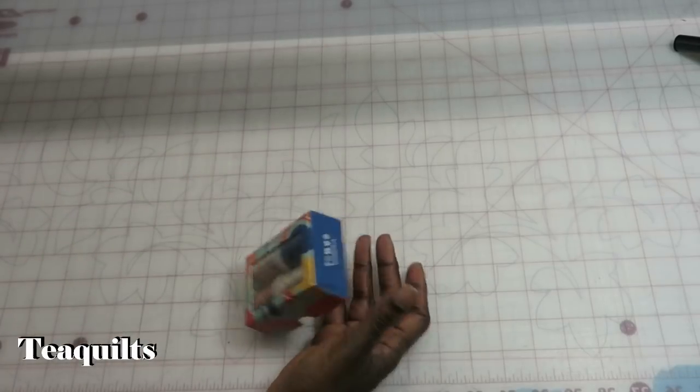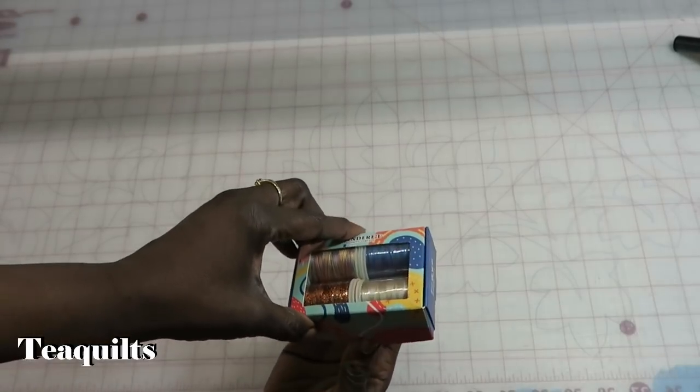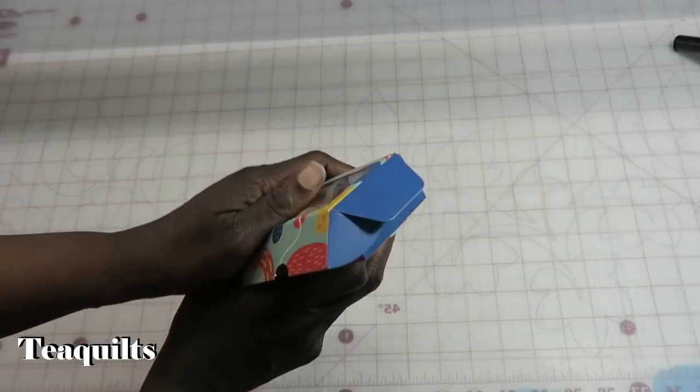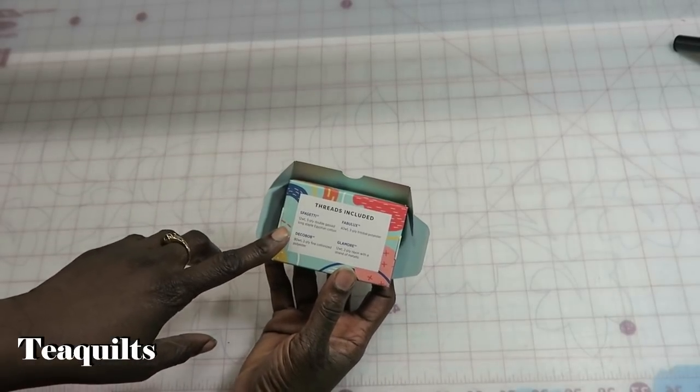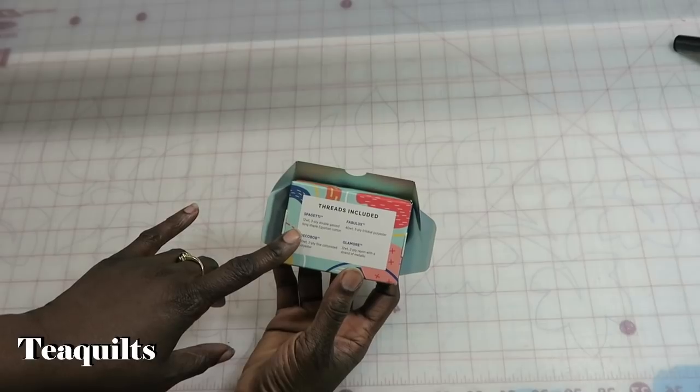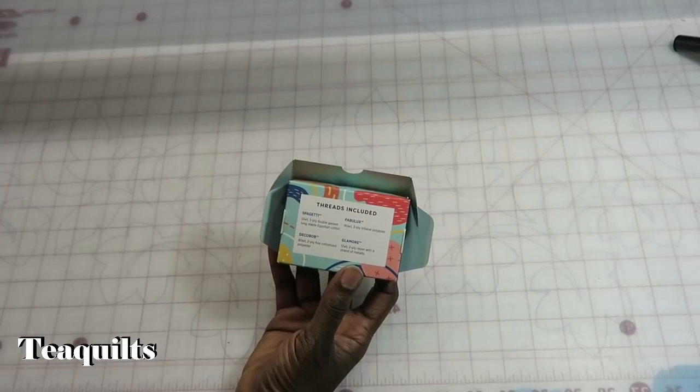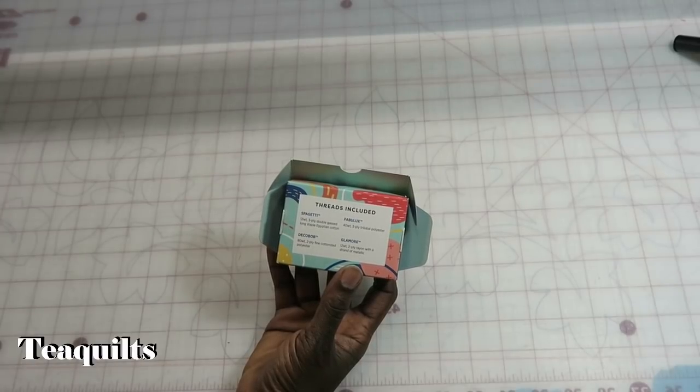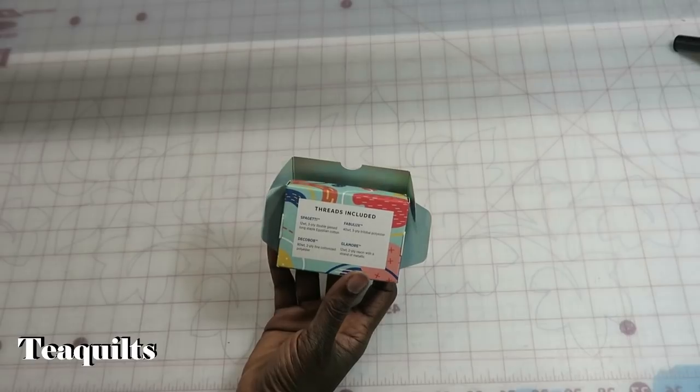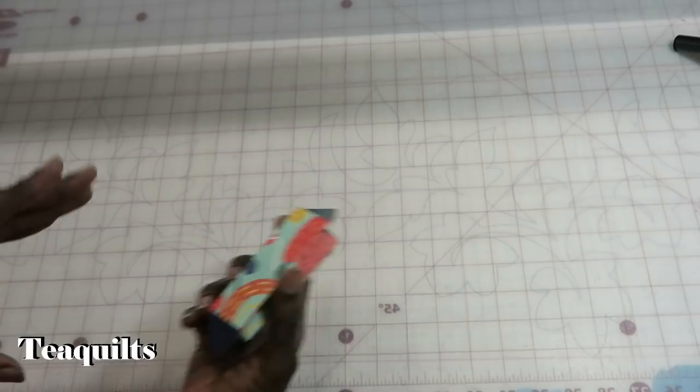I talked about this in my video, but when you sign up to be with AQS, they gave you this free gift, and it is Wonderfil thread. And it has four different types of thread. They have spaghetti thread, which is 12 weight, three ply, double gas, long staple, Egyptian cotton. Deco Bob, which is 80 weight, two ply, fine cottonized polyester. Fabulux, which is 40 weight, three ply, tri-lobal polyester. And Glamour is 12 weight, two ply rayon with a strand of metallic. So that will be interesting to play with.